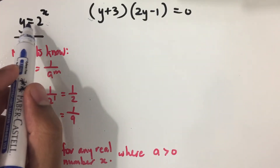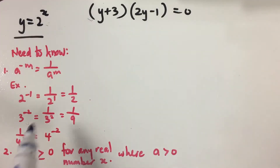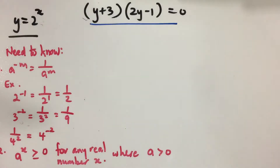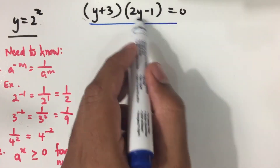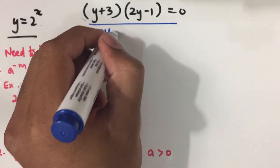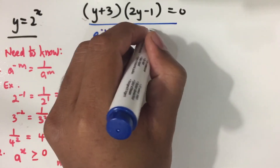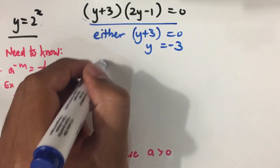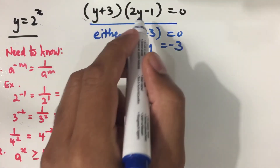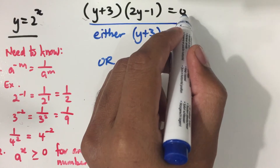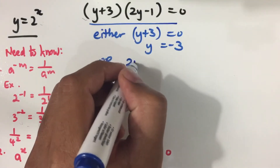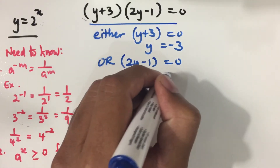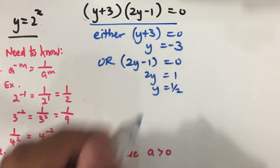Recalling that y equals 2 to the power of x, either y plus 3 equals 0 giving y equals negative 3, or 2y minus 1 equals 0 giving 2y equals 1, so y equals one half.